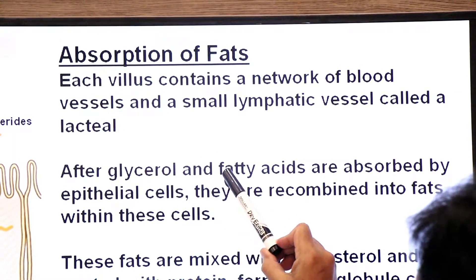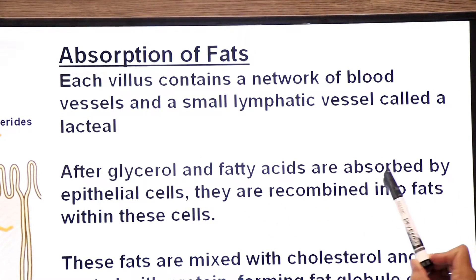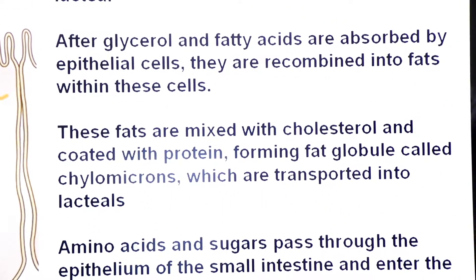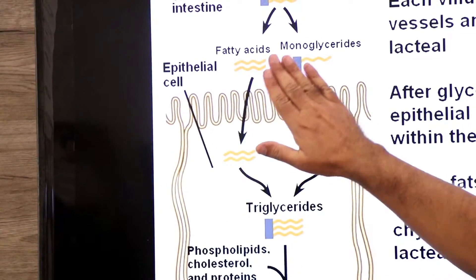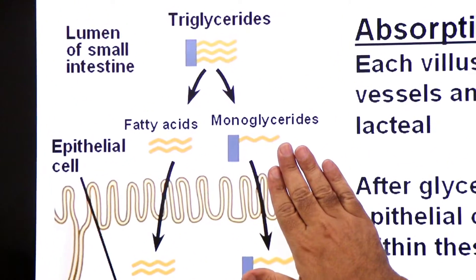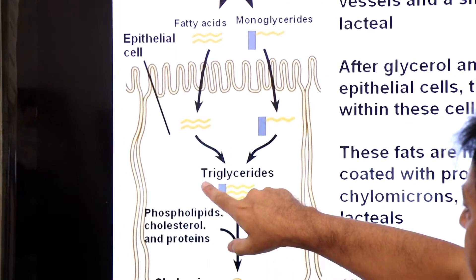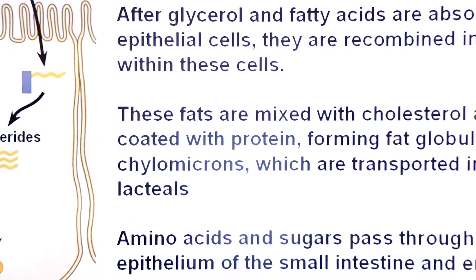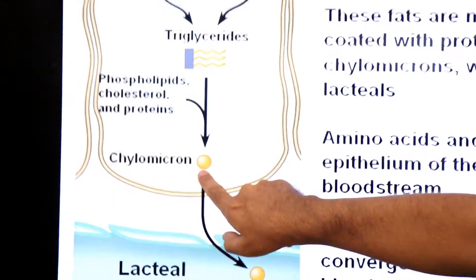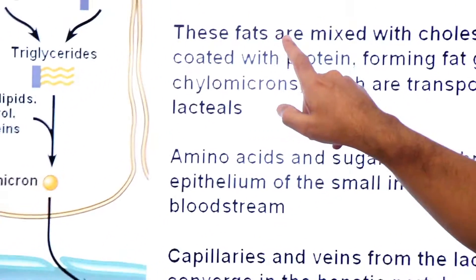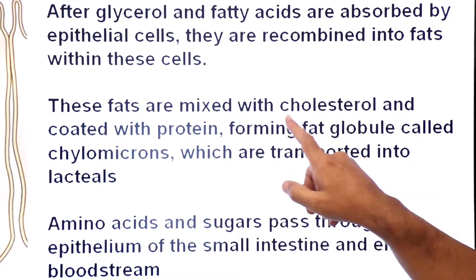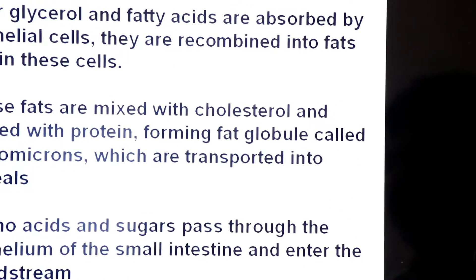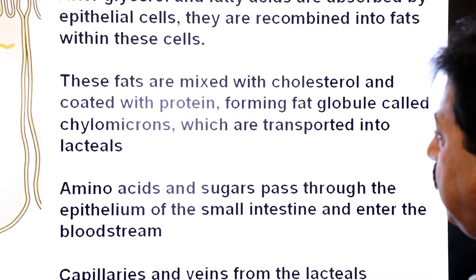Glycerol and fatty acids are absorbed by the epithelial cells and recombined into fats. The triglycerides combine with phospholipids, cholesterol, and proteins to form fat globules called chylomicrons, which are then transported into the lacteals.